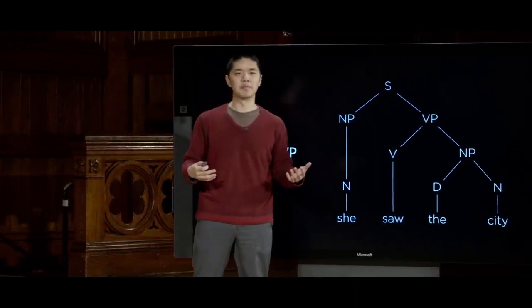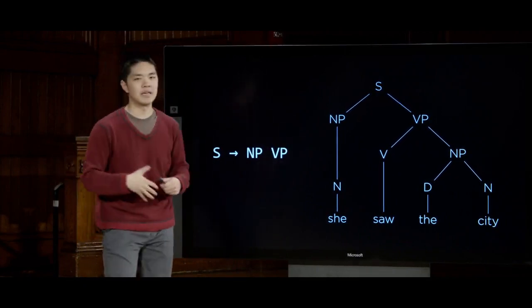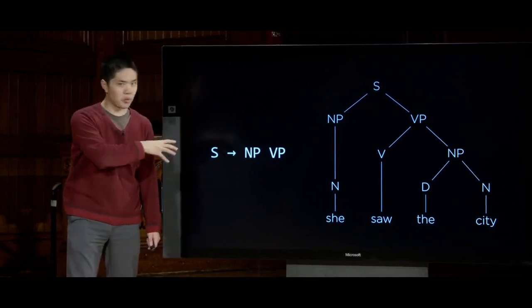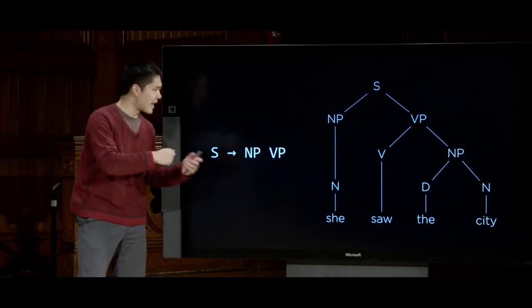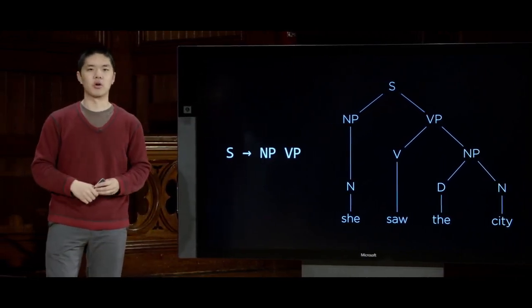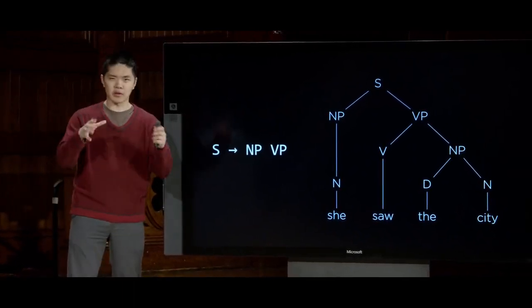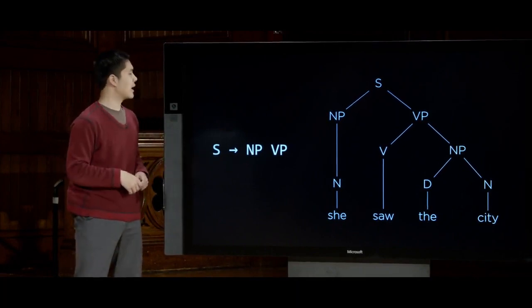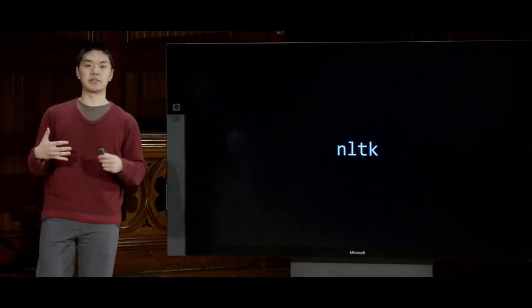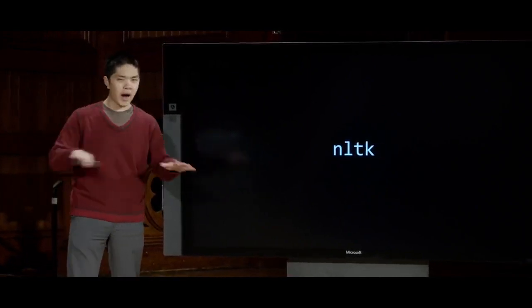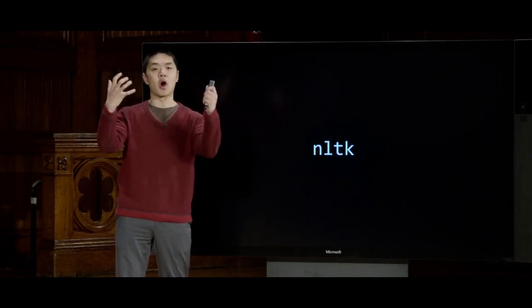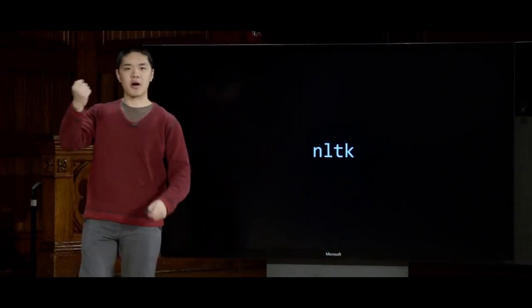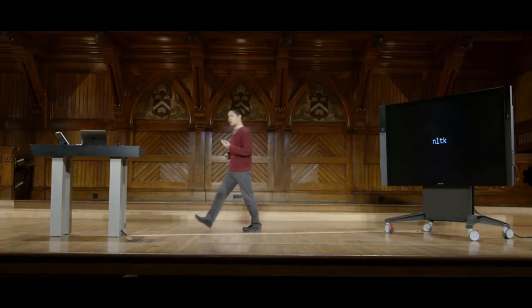If you tried to do this for a sentence that was not grammatical — something like 'saw the city she' — that wouldn't work. There'd be no way to use these rules to generate that sentence. This sort of model can be very helpful if the rules are expressive enough, though with just simple rules, there are many grammatically well-formed sentences we won't be able to generate. We might just need more complex rules to deal with those cases. One way we can interact with this in Python is by using NLTK, the Natural Language Toolkit.